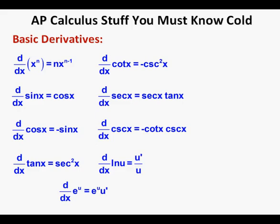Now to the calculus stuff you must know cold. Basic derivatives: the derivative of x to the n power is n times x to the power of n minus 1 — that's the power rule. The derivative of sine x is cosine x. The derivative of cosine x is negative sine x. The derivative of tangent x is secant squared x. The derivative of cotangent x is negative cosecant squared x. The derivative of secant x is secant x times tangent x. The derivative of cosecant x is negative cotangent x times cosecant x. Note that every trigonometric ratio starting with 'c' has a negative sign when derived.